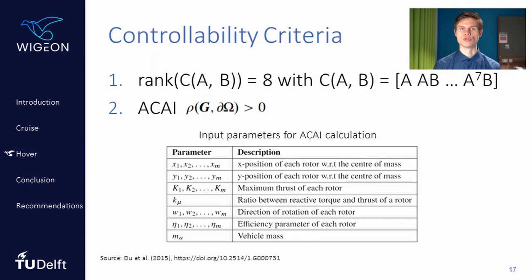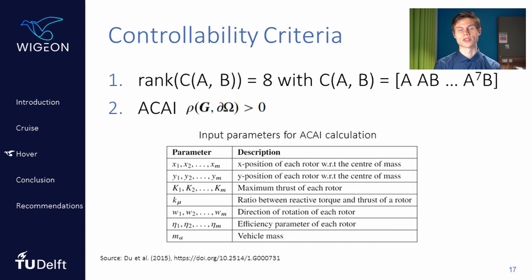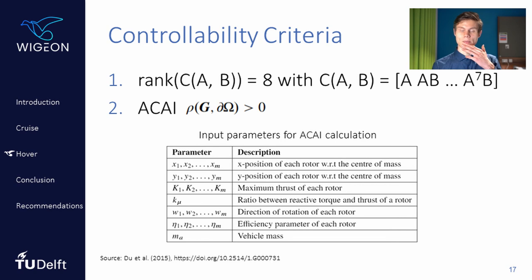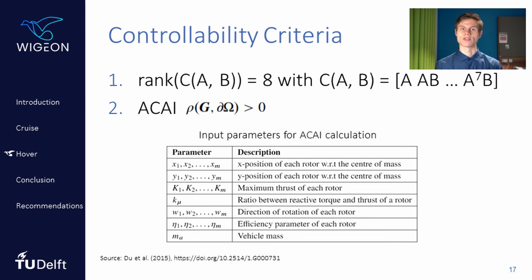Using this model, Du et al. proposed two criteria for controllability. The first is well known: the rank of the controllability matrix must equal the number of states we want to control, which was never found to be limiting in our design process. The second is the Available Control Authority Index, which needs to be larger than zero. This index depends on the location of the rotors, their sense of rotation, the mass of the aircraft, the centre of gravity of the aircraft, as well as a coefficient relating the reactive torque to the thrust of each rotor.